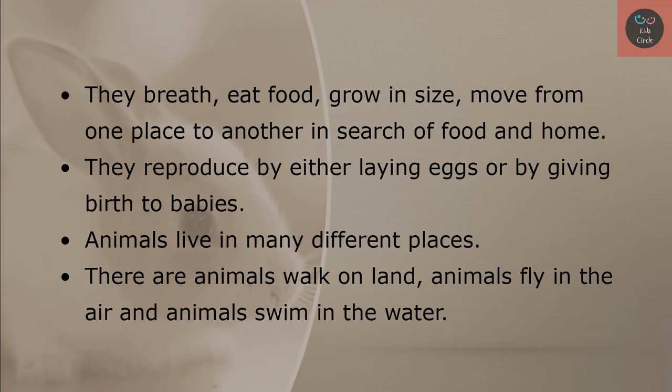They breathe, eat food, grow in size, and move from one place to another in search of food and home. They reproduce by either laying eggs or by giving birth to babies. Animals live in many different places. There are animals that walk on land, animals that fly in the air, and animals that swim in the water.